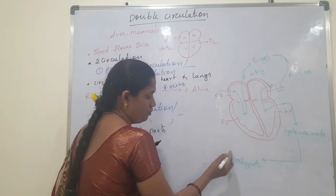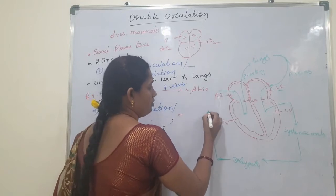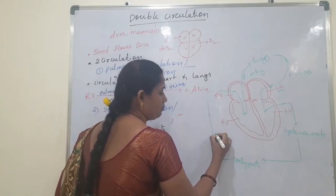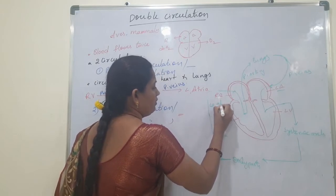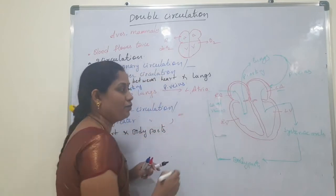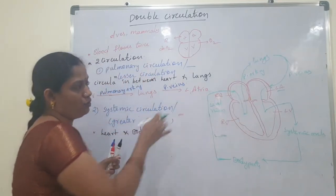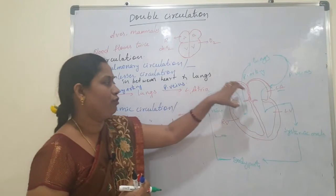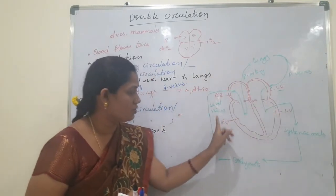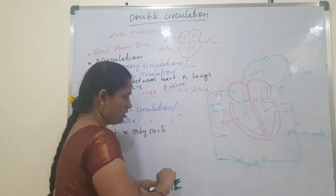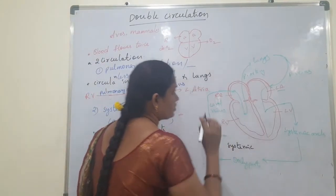Blood is collected from the body parts and, through the caval veins — pre-caval vein and post-caval vein — it flows into the right atria. This circulation is called systemic circulation.